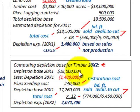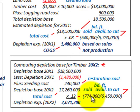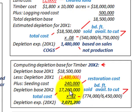For the depletion base in 20x2: we take the 20x1 depletion base of $18,500,000, subtract the depletion taken in 20x1 of $1,480,000, then add in the seedling costs of $240,000 — those are restoration costs. Our total depletion base for 20x2 is $17,260,000. We sold 774,000 board feet out of 6,450,000 available to cut, giving a fractional amount of 12%, which yields a depletion expense for 20x2 of $2,074,200.